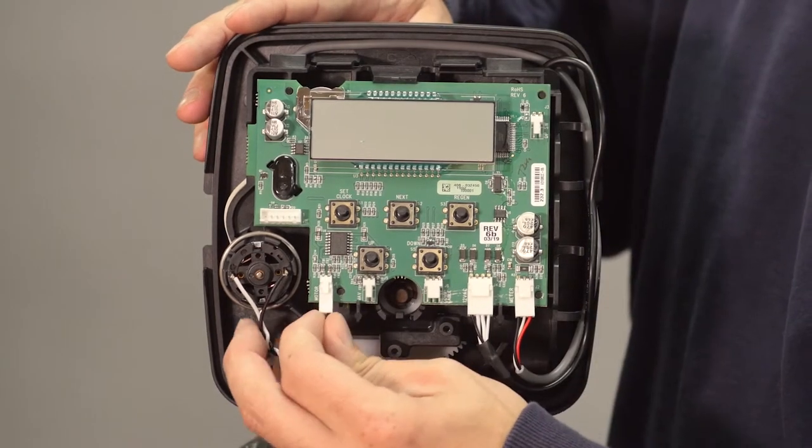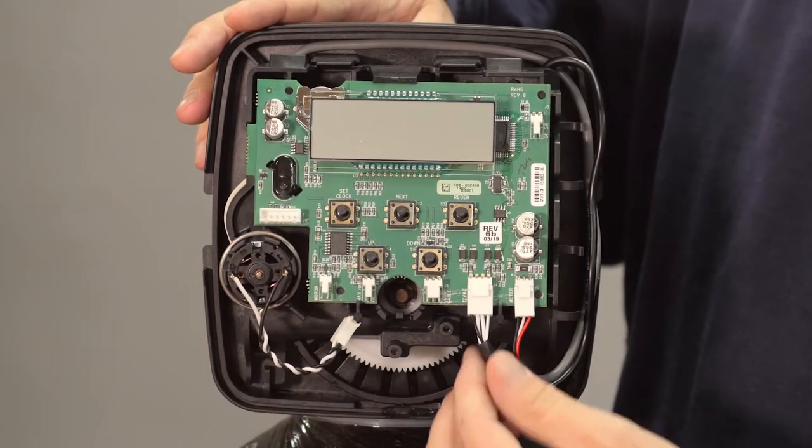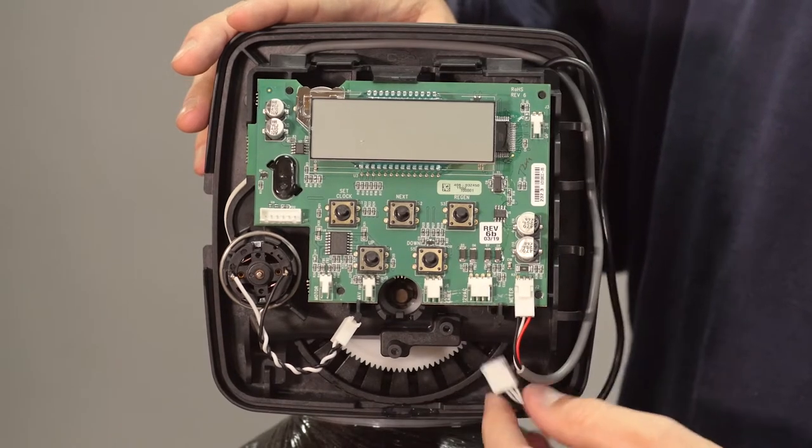To remove the PC board, note the locations of the wires and gently pull down to unplug them.